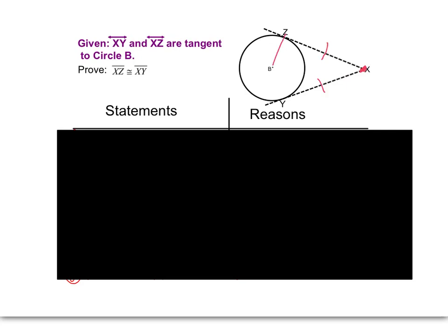Well, first I'm going to add some things to the figure. I'm going to draw these two radii, BY and BZ, and then I'm also going to draw BX. Now, from the last theorem that we just learned, since this is a radius and a tangent, those are perpendicular. So that's perpendicular, and that's perpendicular. So we've got two right triangles. Okay, let's now walk through our proof.